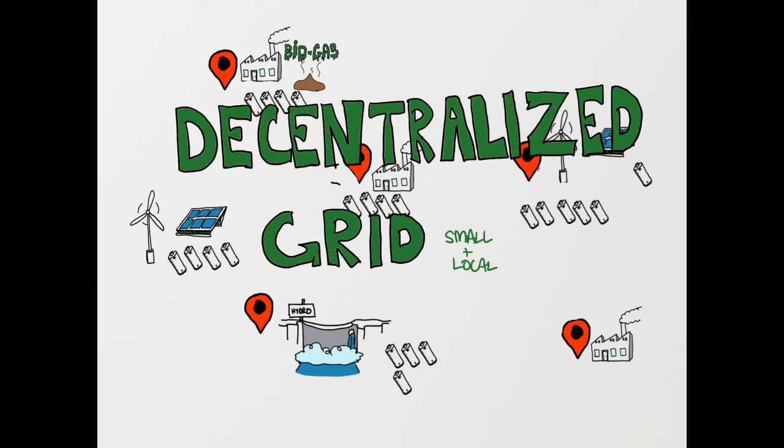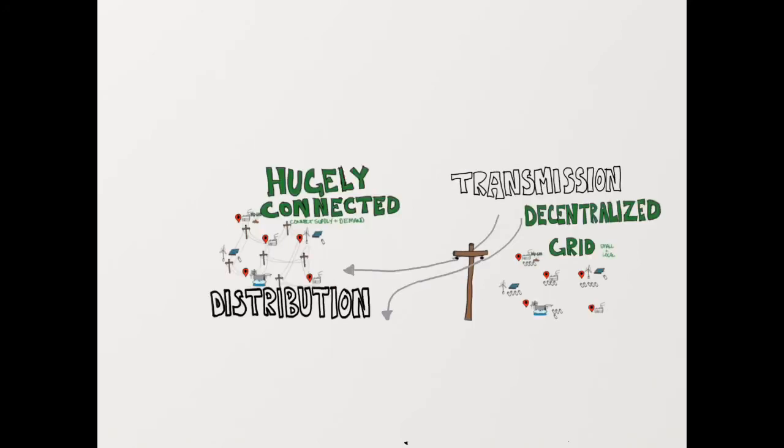In order to accommodate a different mix of energy generation with cyclical producers, the traditional steady options, and emerging sources, the grid can help balance supply and demand by either being hugely connected or decentralized.